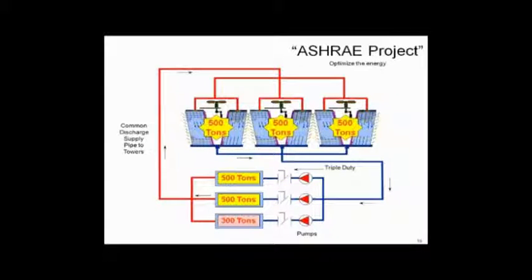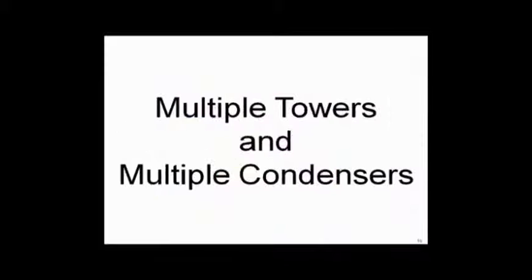To keep it simple, I'm going to use a 10 degree range, which means my pumps would be 1500 GPM, three GPM per ton on the 500 ton chillers, and of course three GPM per ton on the 300 ton chiller. So let's go back to our example with multiple towers and multiple condensers and ask you a simple question: how do you pipe?